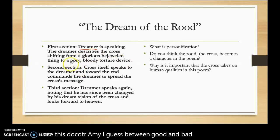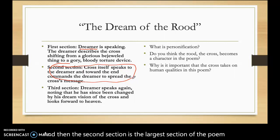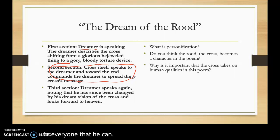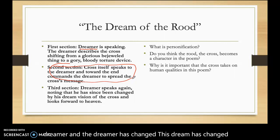The second section is the largest section of the poem, and that is where the cross speaks to the dreamer. Toward the end of this section, the cross commands that the dreamer tell his story — the story of the cross from the cross's point of view — to everyone he can. Then we have the third section where we're back to the dreamer, and the dreamer has changed. This dream has changed him forever.